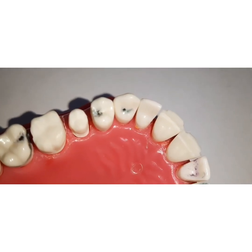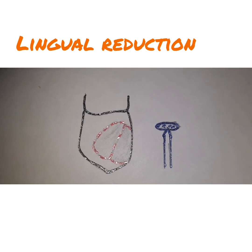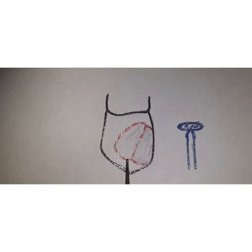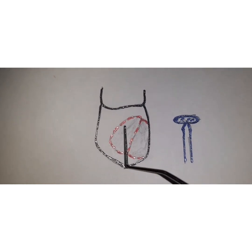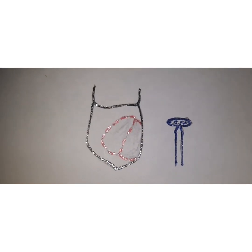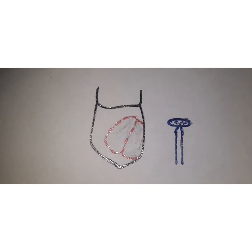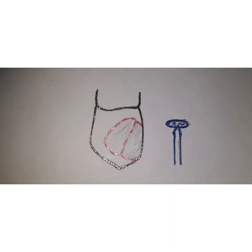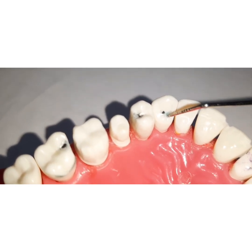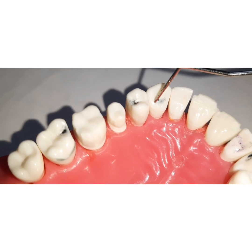Now let us look at the steps involved in partial veneer crown preparation. The first step is the lingual reduction — specifically the cingulum reduction. Taking a canine as our example, you are going to prepare both surfaces using a wheel-shaped diamond bur. You will perform a concave cingulum reduction with a clearance of around 0.75 mm, and you can also place depth orientation grooves on the lingual surface to ensure uniform reduction. Lingual reduction is done in two planes: the cingulum reduction and then the lingual axial reduction.